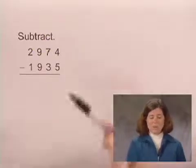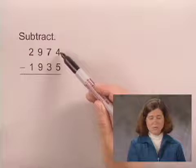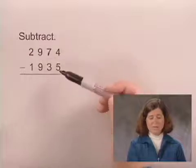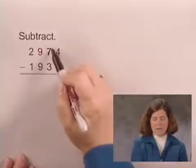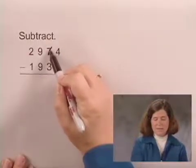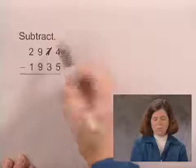To begin with, we need to subtract 4 minus 5 1s. But in order to do that, we'll need to borrow a 10 from the 7 10s, removing one 10.